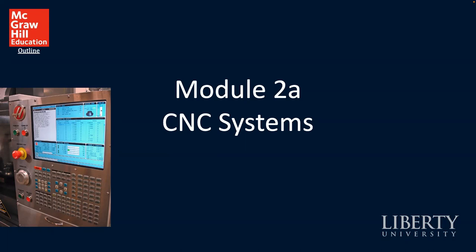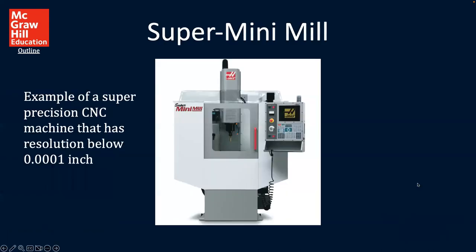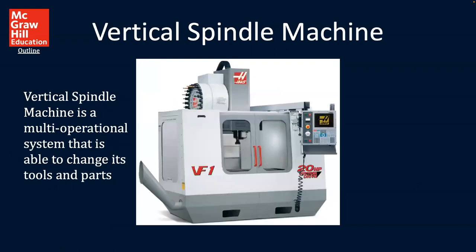First, let's take a survey of some of the different types of systems that you'll encounter, and this will give you some perspective of what you'll see in your future. Here we have a super mini mill — this is an example of a super precision CNC machine that has resolution below .0001 inch, so we're getting into some small levels of precision for very intricate types of machining.